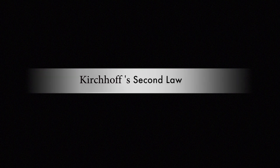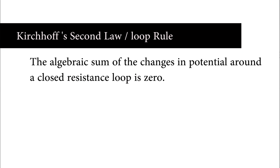Now let us look at Kirchhoff's second law, also known as the loop rule. The algebraic sum of changes in potential around any closed resistance loop is zero. The change in potential, denoted by ΔV, equals zero. Since potential difference is the product of current and resistance, the summation of IR equals zero.